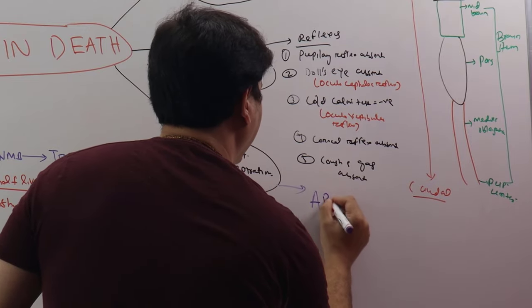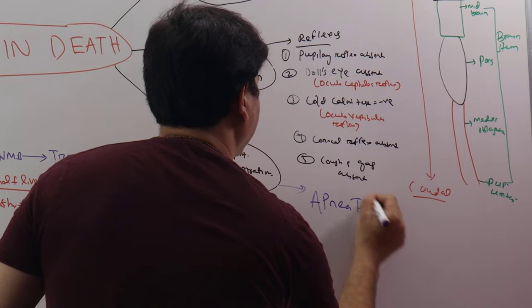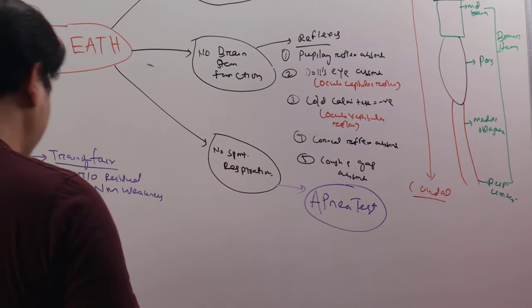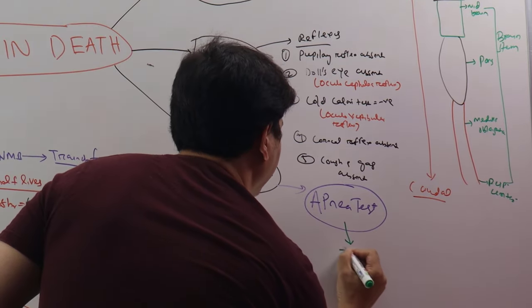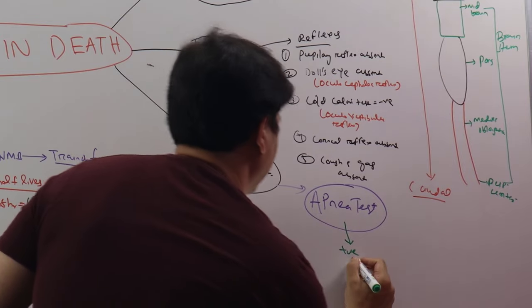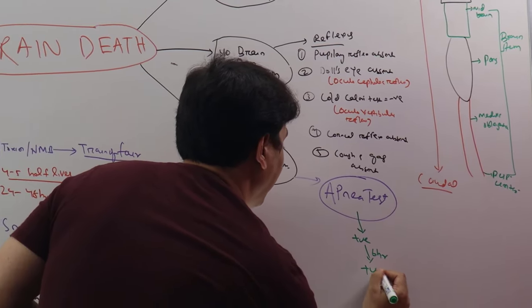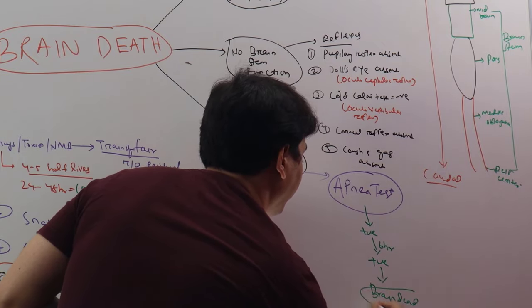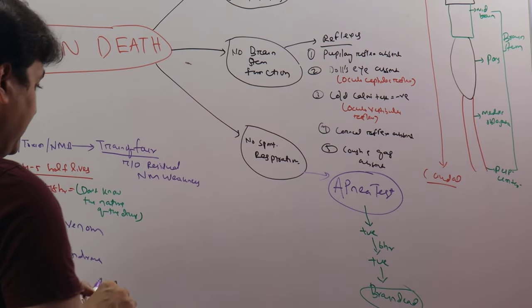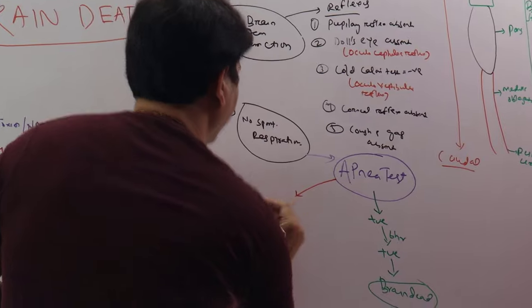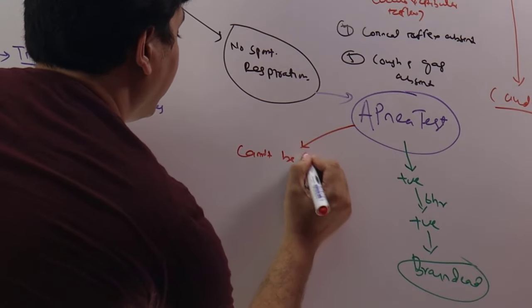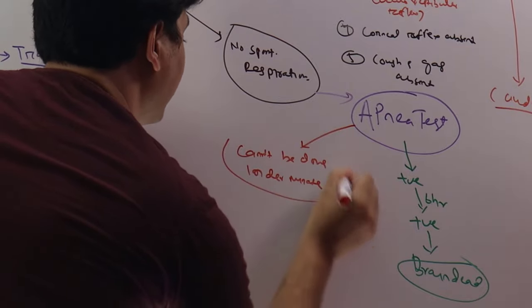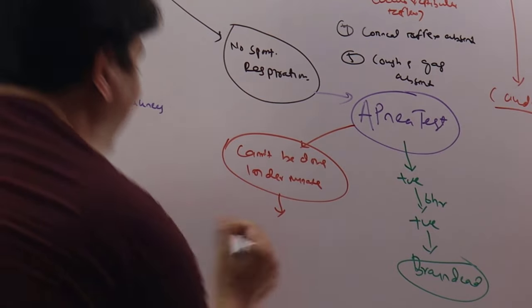We have to prove that there is no spontaneous respiration. We have to perform what is called an apnea test. The details of the apnea test we will discuss in our next video. But for our discussion today, if the apnea test is positive and it has to be done twice at a gap of six hours, then the patient is brain dead. However, if the apnea test cannot be done or is indeterminate, in such situations you have to do what we call ancillary tests.